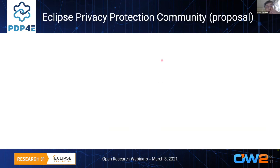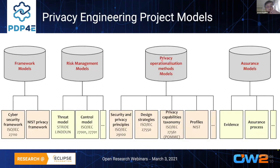The same applies for engineering. The engineer must be helped with models depending on the perspective: framework, risk management, privacy operationalization, and assurance. This relates to the previous cycle that Samuel showed, where we have several facets working together.